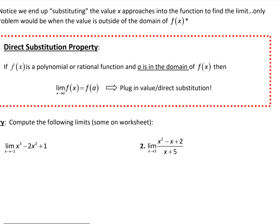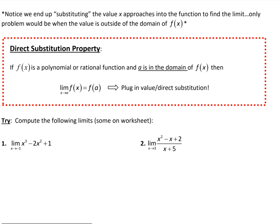We actually have a property called the direct substitution property. I'm going to put this on the screen so we can talk about it — this is definitely one you're going to want to put in your notes. The direct substitution property says that if you have a polynomial or rational function, and a is in the domain of f of x, then the limit of f of x as x approaches a is simply f of a.